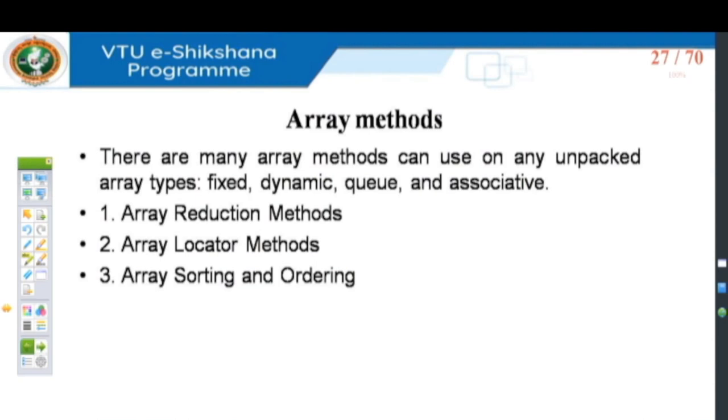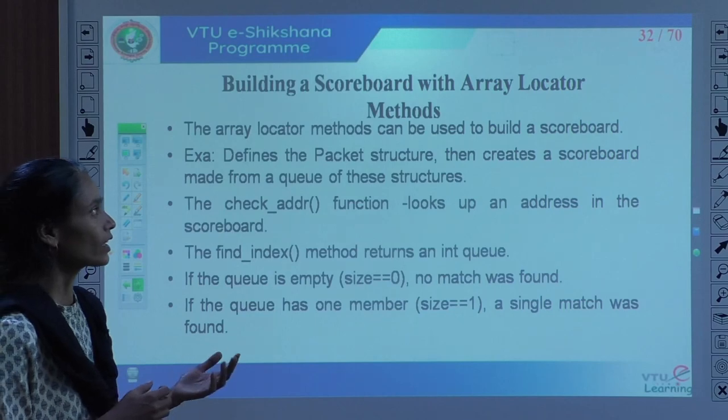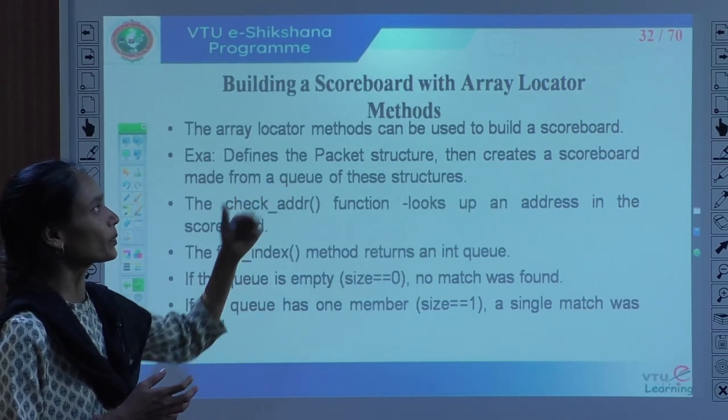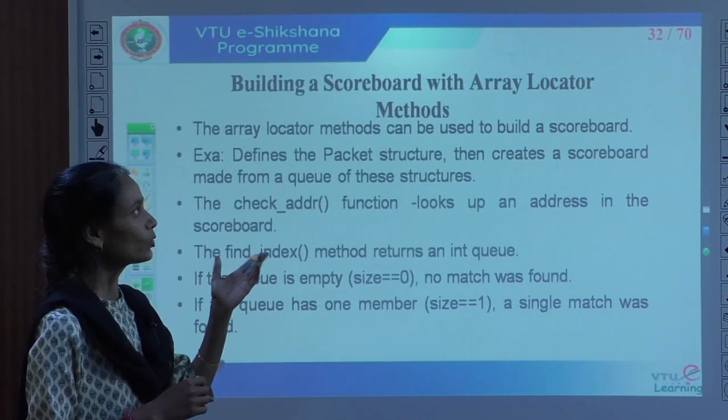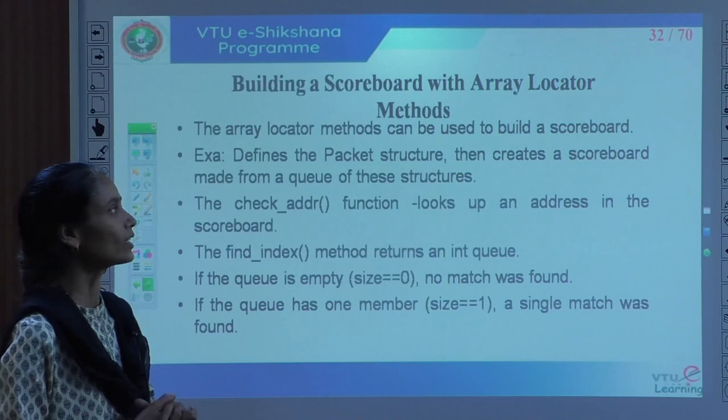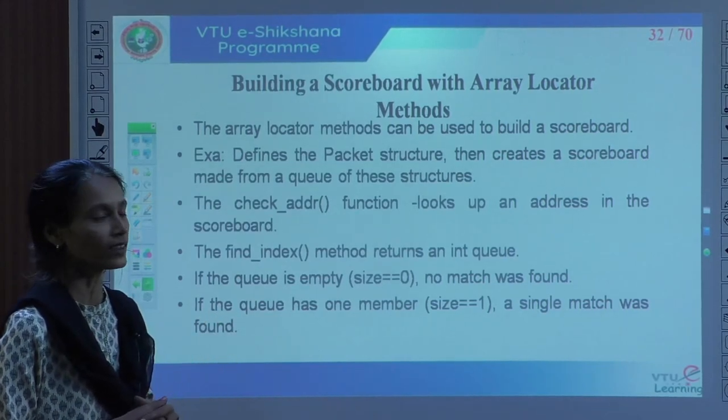As we have seen, array methods are helpful for making use of unpacked array types — whether fixed, dynamic, queue, or associative. With the help of array reduction methods, array locator methods, or array sorting and ordering, we have seen examples of how they handle complexity while writing the system. The predicted values are stored in the scoreboard, and those values are matched with the output obtained from the design under test.